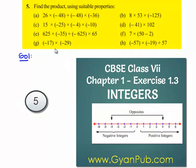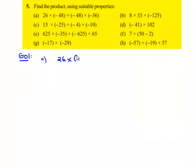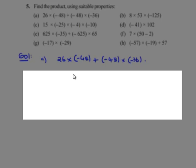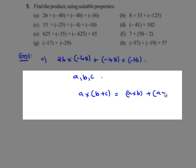We'll see the fifth question. The first bit is 26 times negative 48 plus negative 48 times negative 36. Here we'll use the distributive law of multiplication over addition, which means for any integers a, b, and c: a times (b plus c) gives a times b plus a times c. Here, a corresponds to negative 48, b corresponds to 26, and c corresponds to negative 36.